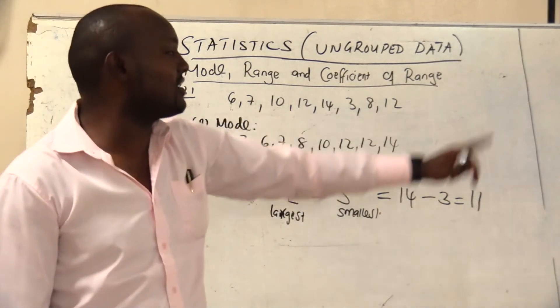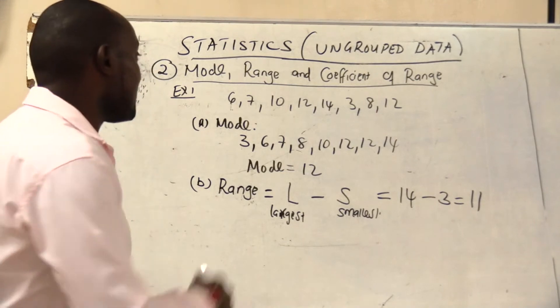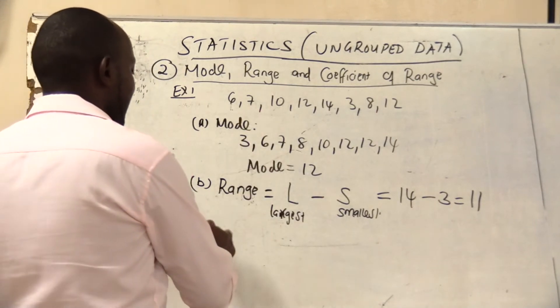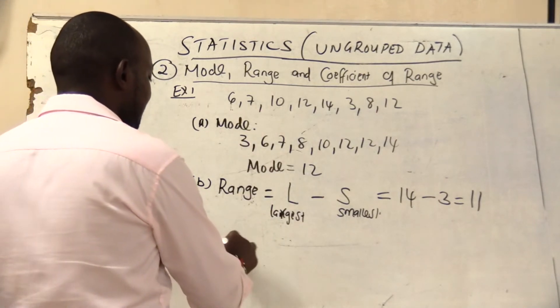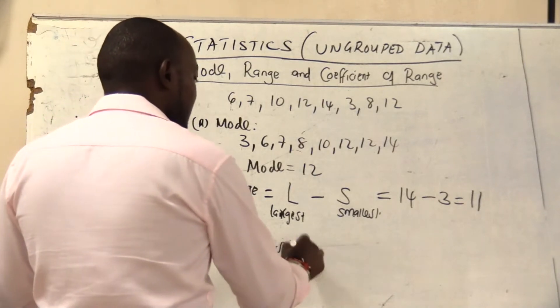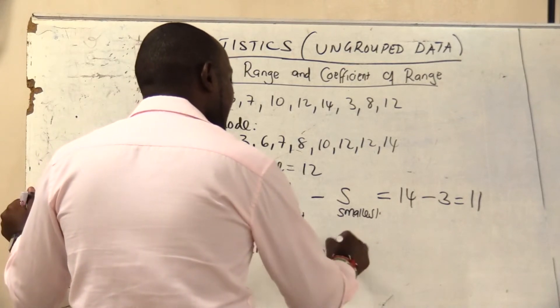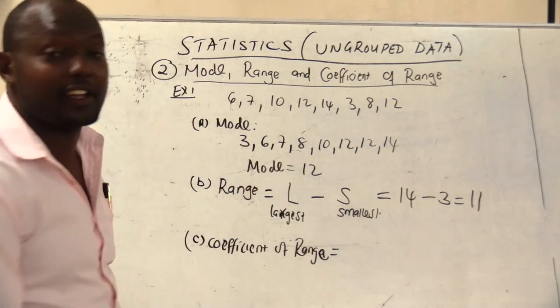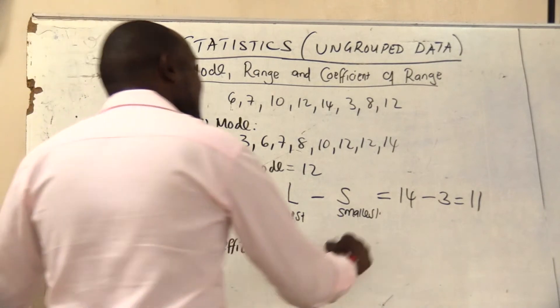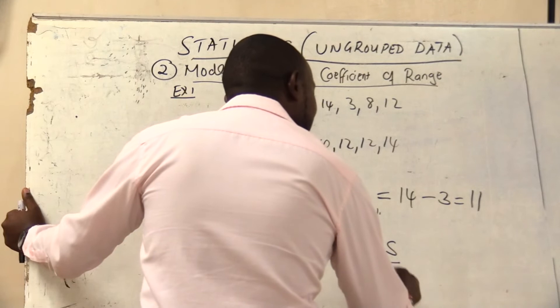If my largest number was 20 I would have taken 20 minus 3. So the largest minus smallest. But now how do we calculate the last one, the coefficient of range?